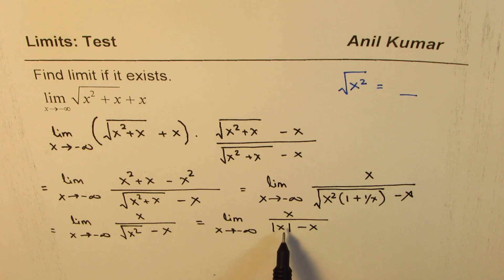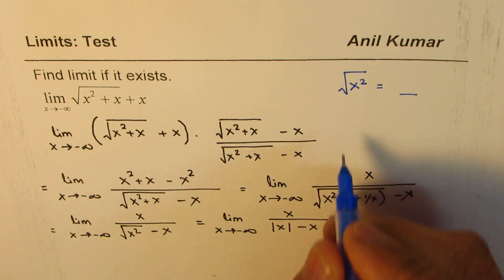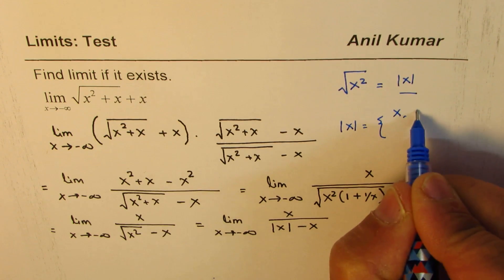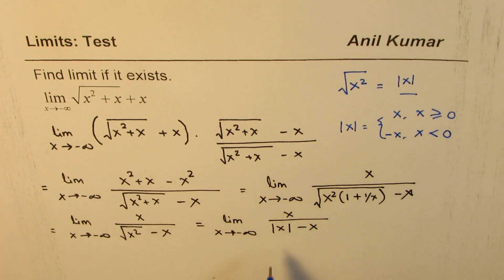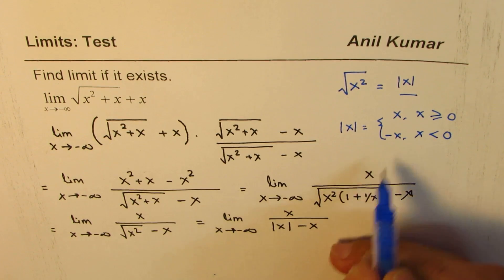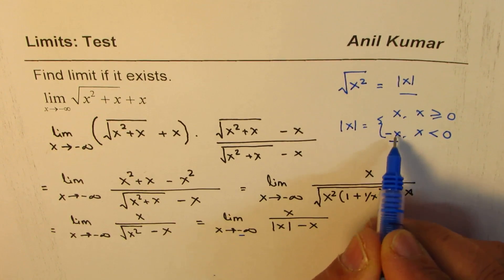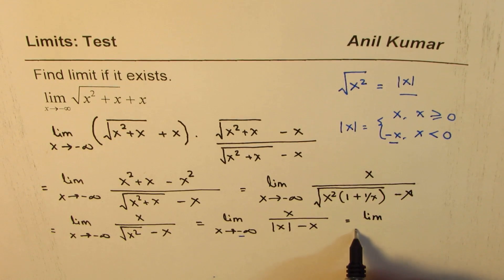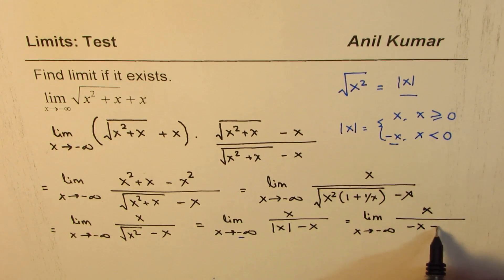When we have absolute value of x and x is approaching minus infinity, we use the definition: absolute value of x equals x if x is greater than or equal to zero, and equals minus x if x is less than zero. Since we are approaching negative infinity, absolute value of x can be written as minus x. So the function becomes x over minus x minus x.